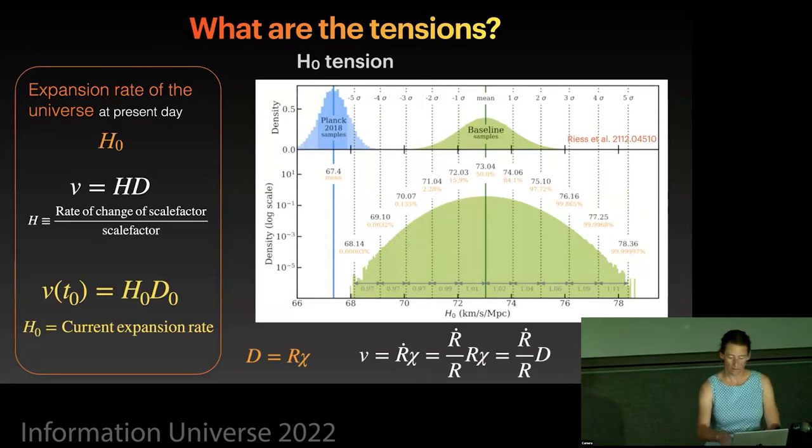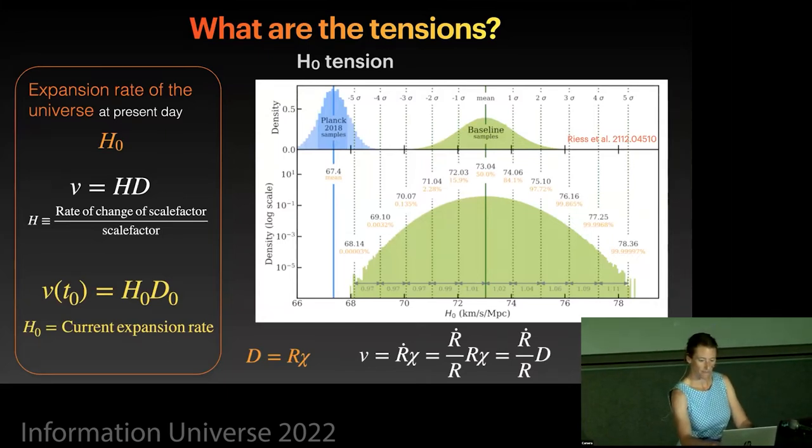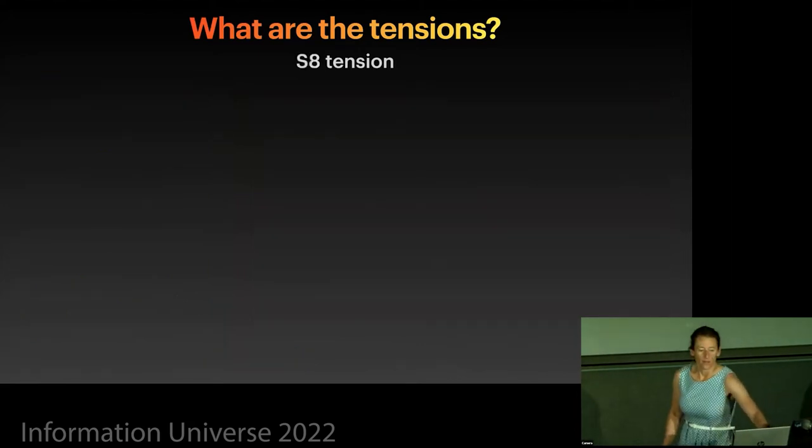This is a plot from the recent Riess et al. paper, which shows the likelihoods that we have for the supernovae here in green and for the cosmic microwave background from Planck here in blue. And this is designed to demonstrate that they seem to be somewhat discrepant. So that's the first of the tensions.